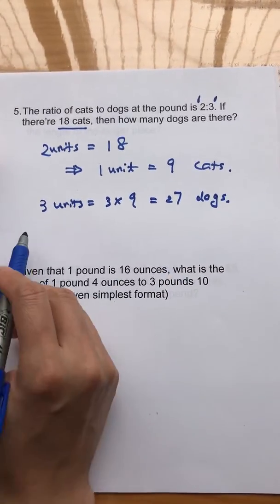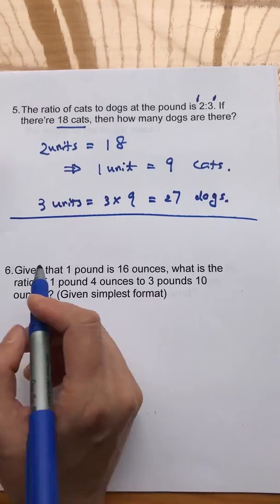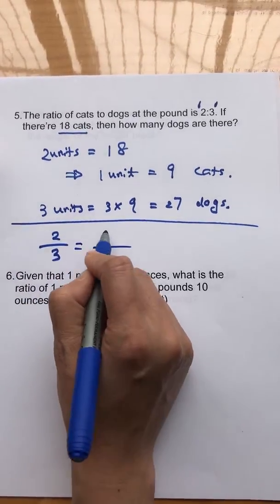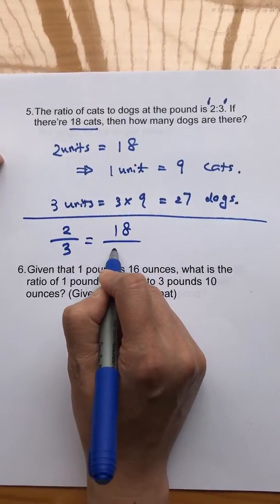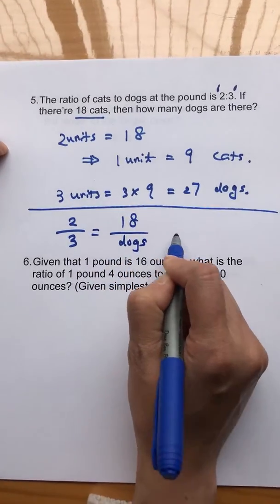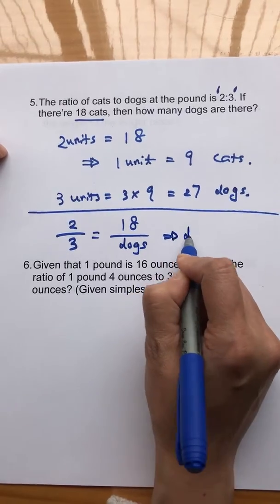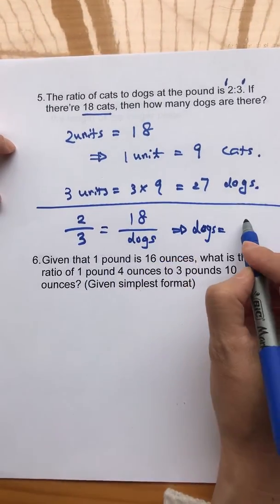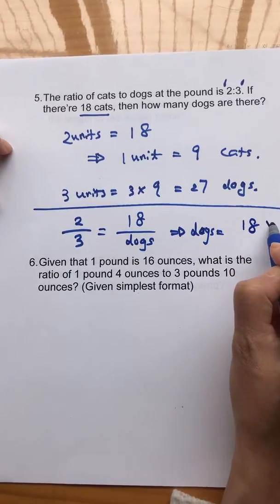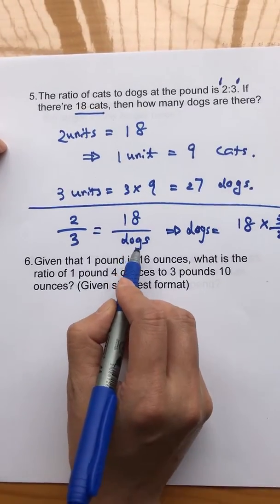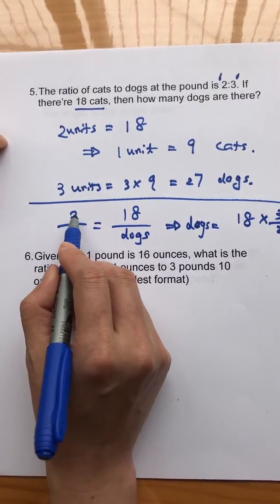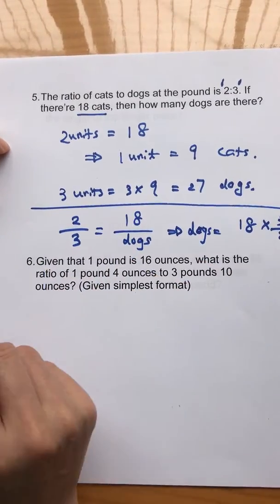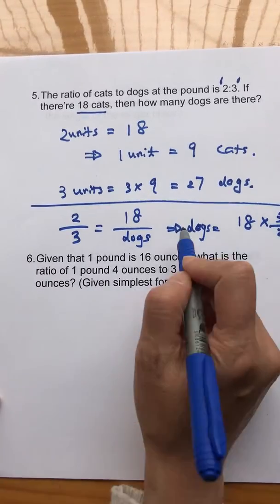And for higher grade students, you can simply do ratio. Cats to dogs are two to three. Cats has 18. What is the number for the dogs? You can figure out the number basically by doing 18 multiply three over two. You put the dog number this way, and you divide the two here and put the three on the numerator to find the number of dogs.